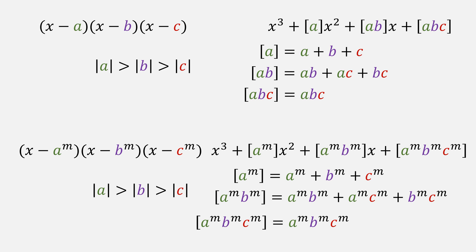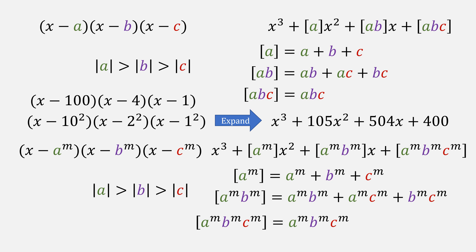For example, if we took our original roots of 10, 2, and 1 and used them to the same power of 2, we could expand our function to be x³ + 105x² + 504x + 400. And just to be clear, these were the same roots that we reverse engineered earlier of 100, 4, and 1.